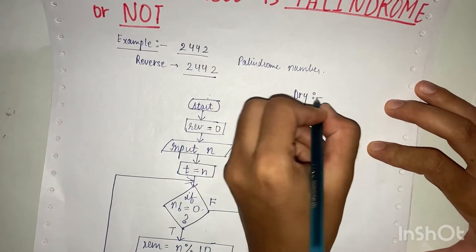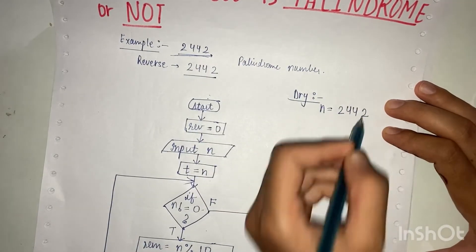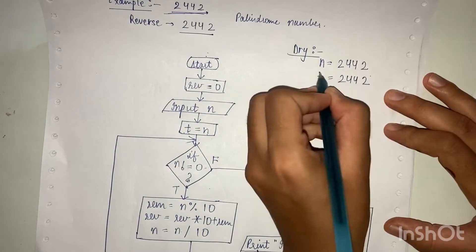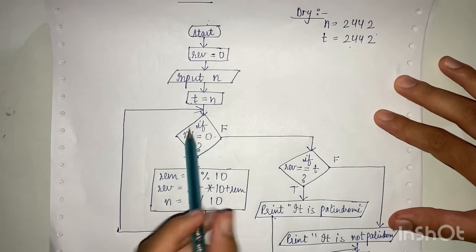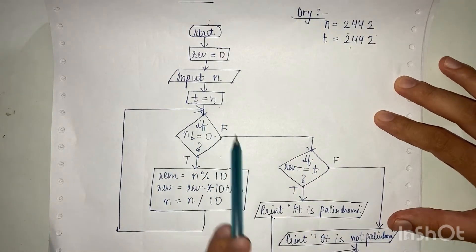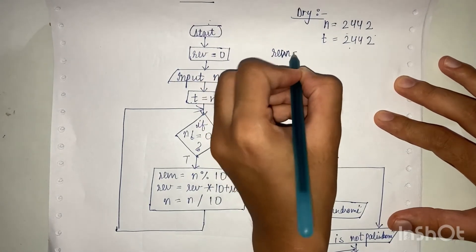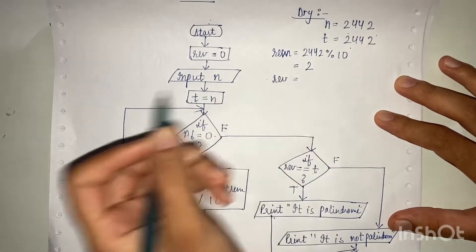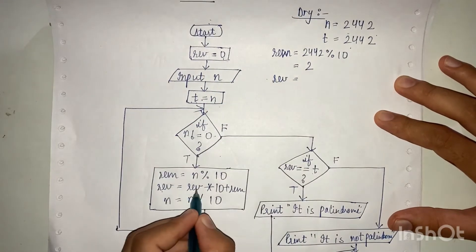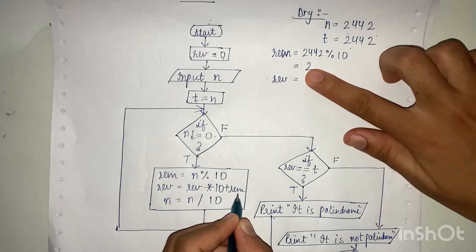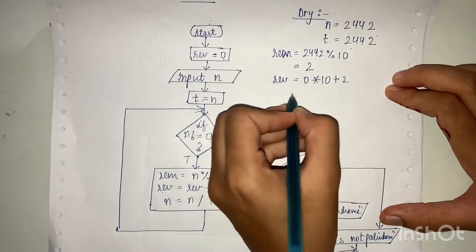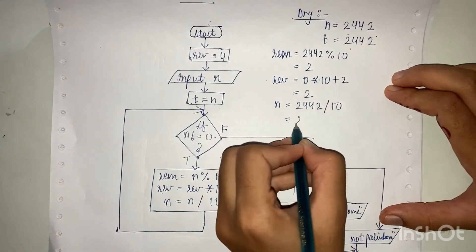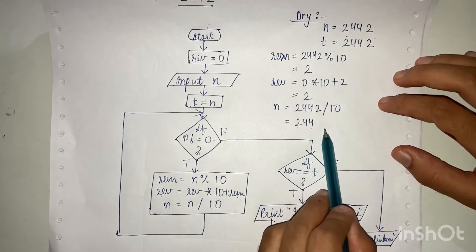Let me dry run this for you. Assume the user inputs n = 2442. We store n in t, so t = 2442. Since n is not equal to 0, the condition is true and we enter the loop. Remainder = 2442 modulus 10 = 2. Rev is initially 0, so rev = 0 × 10 + 2 = 2. Then n = 2442 divided by 10 = 244.